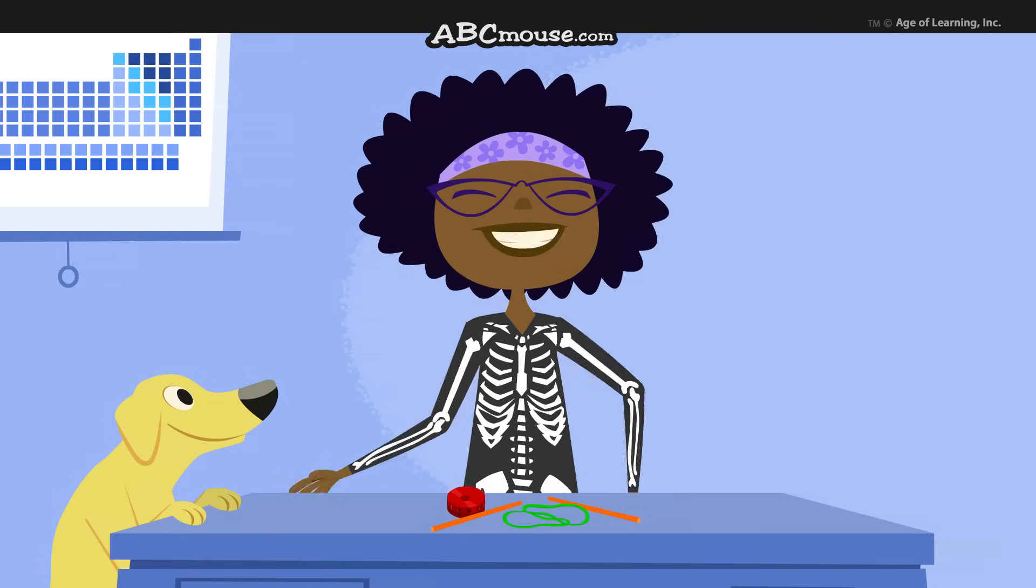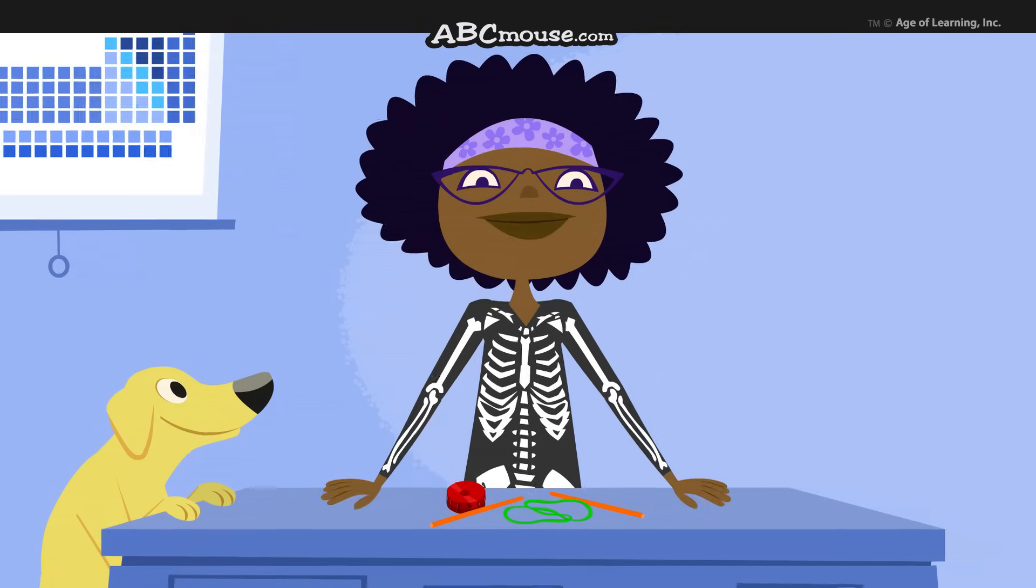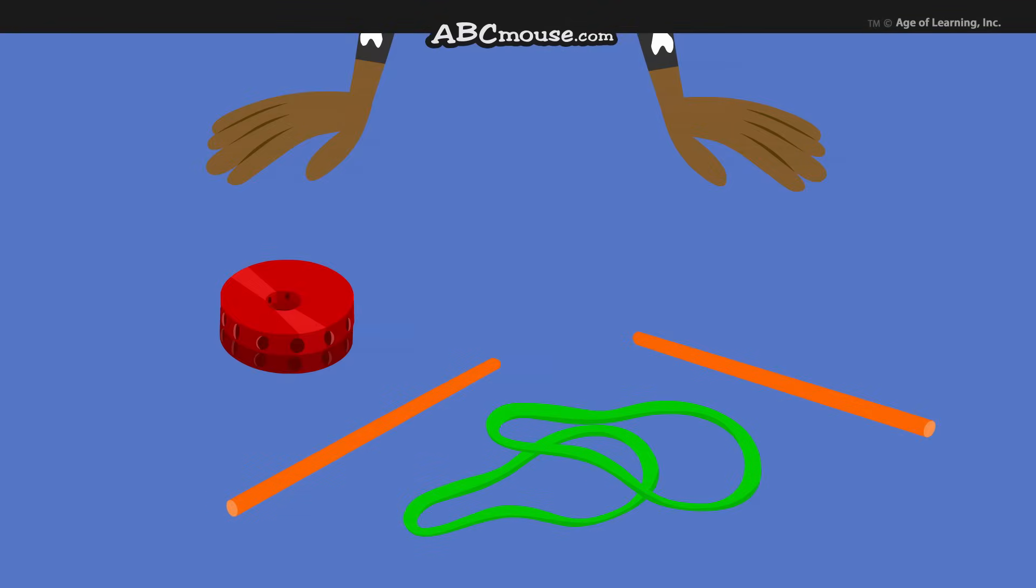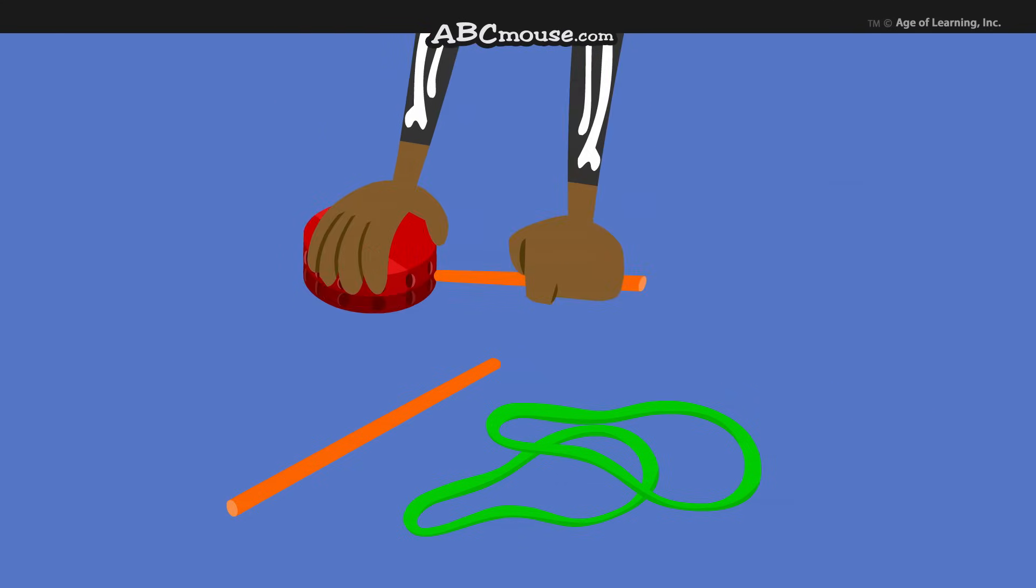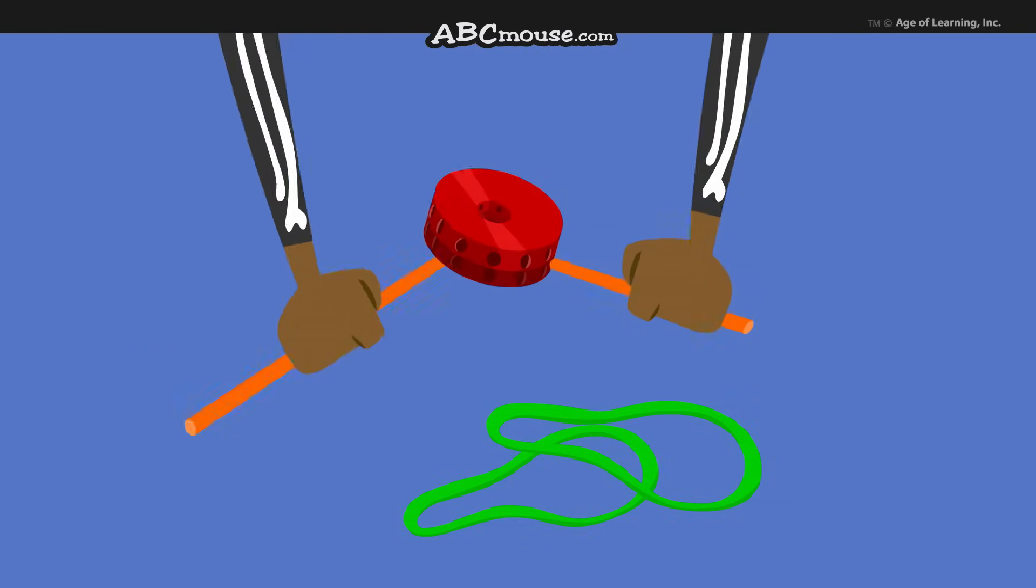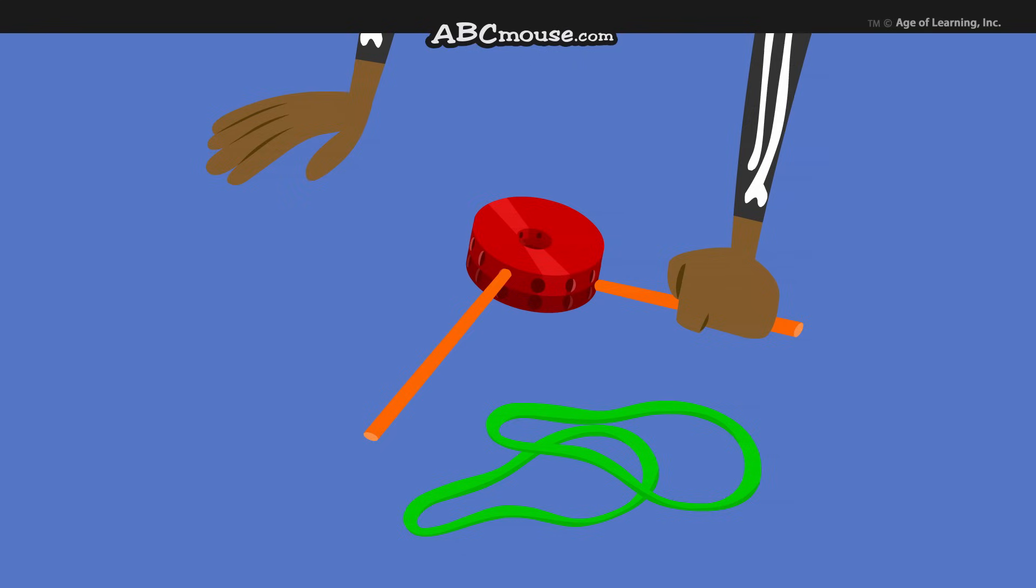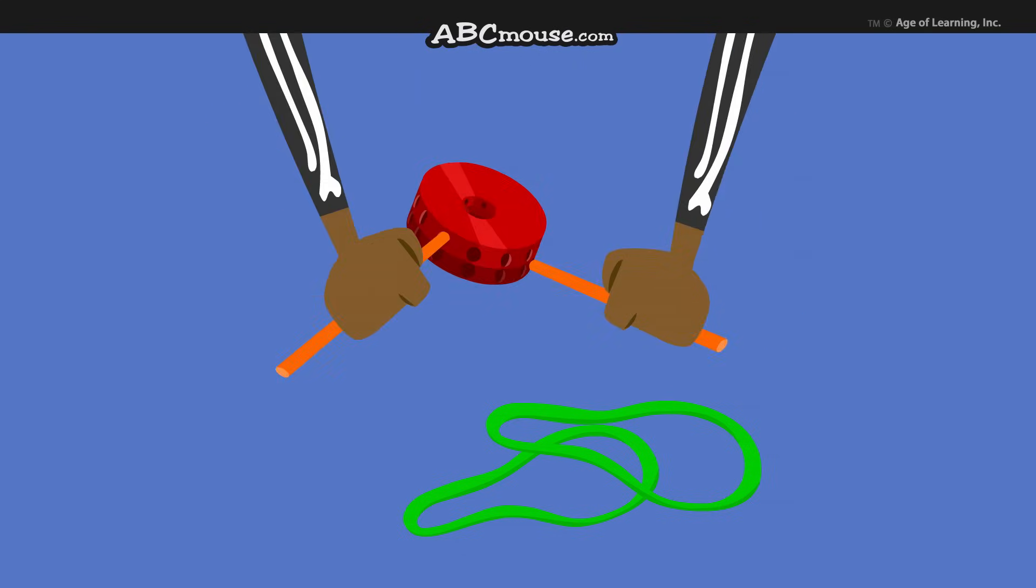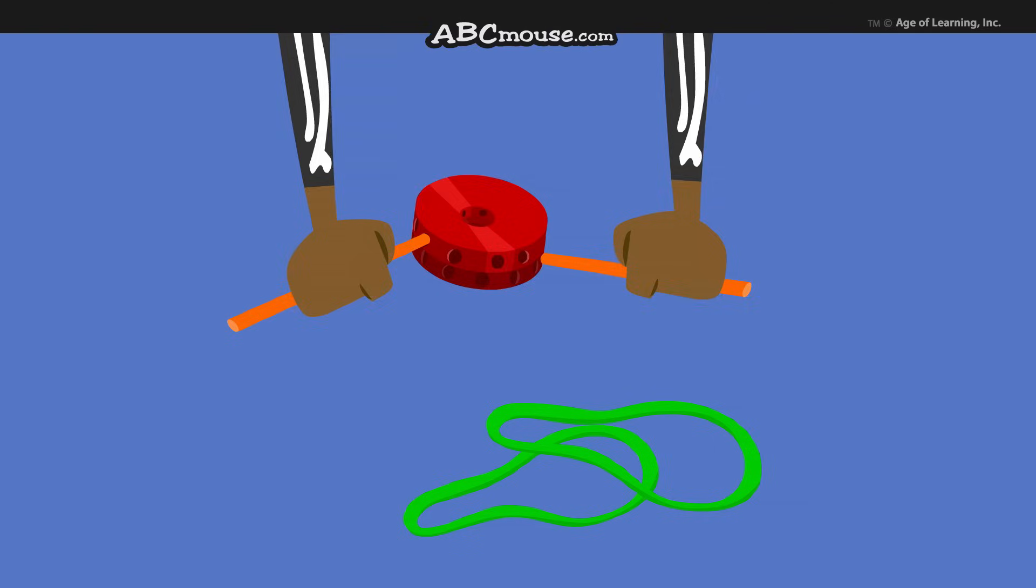Come closer so you can get a good look. These two straight pieces are like bones. This round piece is like a joint. I'll connect these two straight pieces to the joint like so. The joint connects the bones so they can still move. See? That's how your arm bends at your elbow.